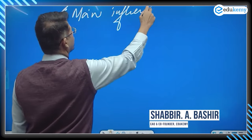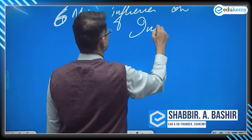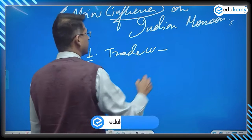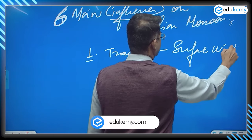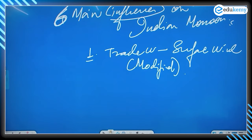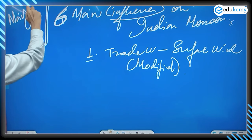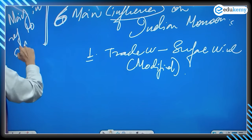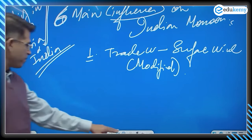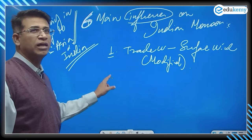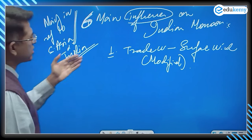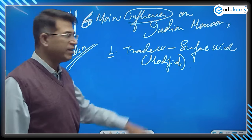There are six main influences on Indian monsoons. The first influence is the trade winds, which are surface winds. Remember that these get modified. I'm talking about these influences mainly in reference to South Asia and India, because monsoons are best developed in South Asia and India. One important influence is trade winds, which are surface winds and they're modified.